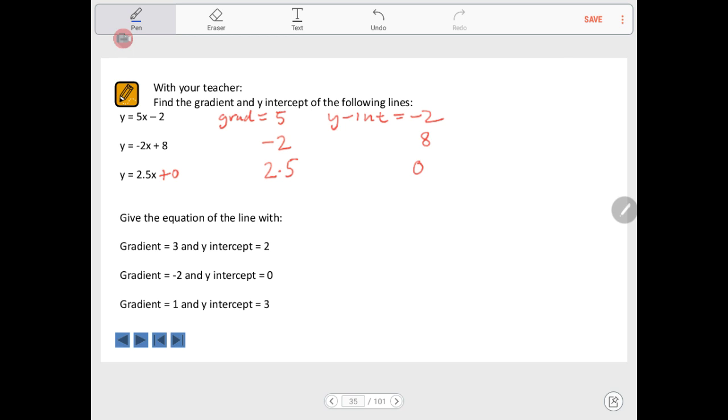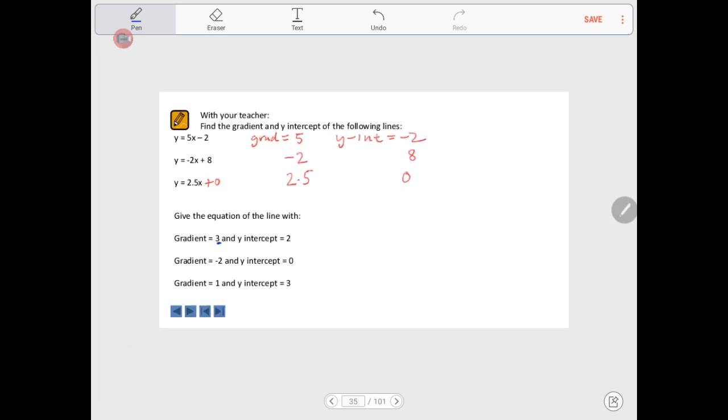So, I'll show you the first one. We've got a gradient of 3, so we have y equals 3x and the y-intercept is positive 2, so we say plus 2. So, maybe you want to pause the video again and try the next two.